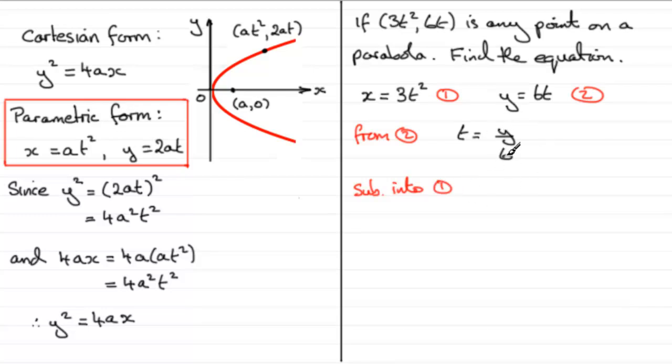So when I put t equals y over 6 into equation 1, I end up with x equals 3 times (y over 6) all squared. I therefore have x equals 3y² over 36, and I can reduce this by canceling down. 3 into 3 goes once, 3 into 36 goes 12 times. If I multiply both sides by 12, I end up with y² equals 12x. There's our equation for our parabola.